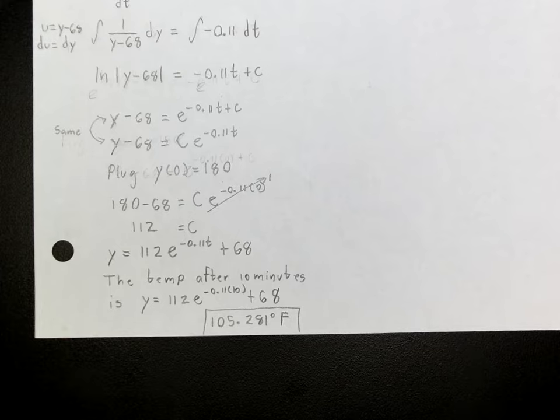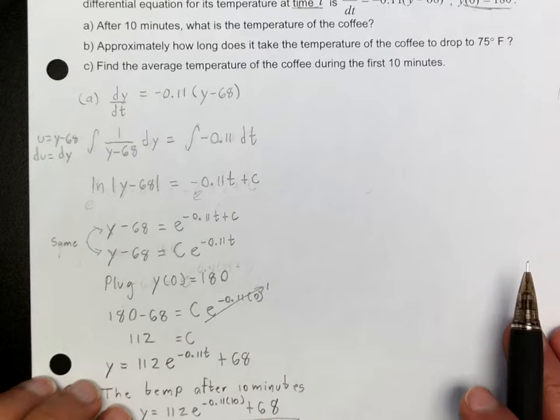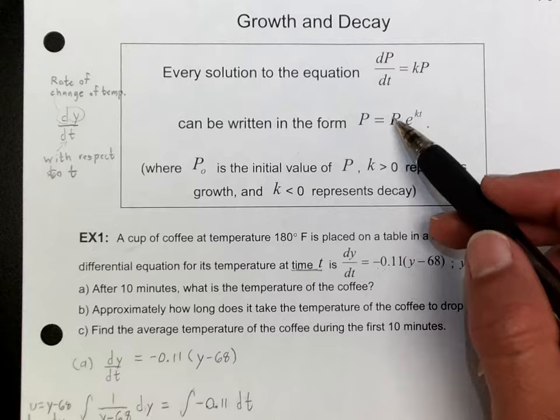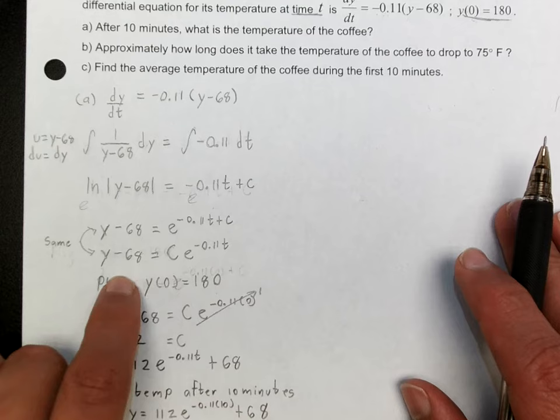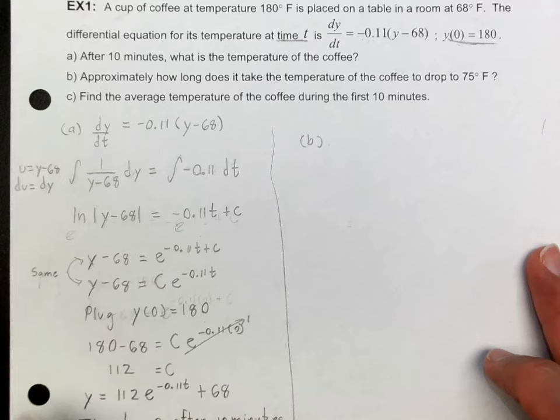Notice that this result is similar in form to the growth/decay function from the beginning. Comparing what we started with and what we ended up with, they're very similar. Now let's move to part B, which is actually much shorter. Part B asks approximately how long it takes for the temperature to drop to 75 degrees.